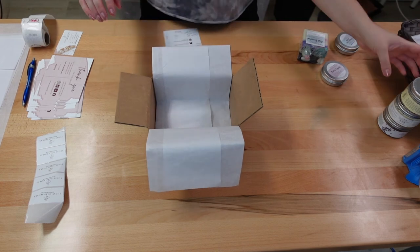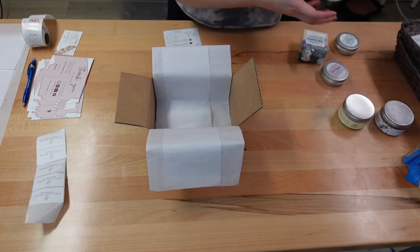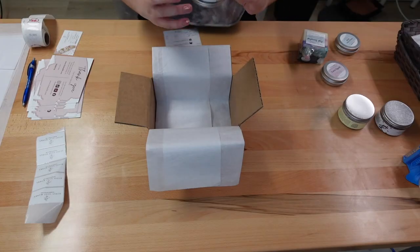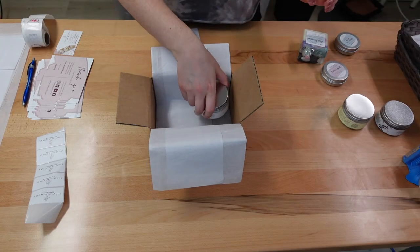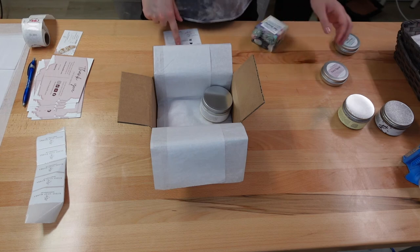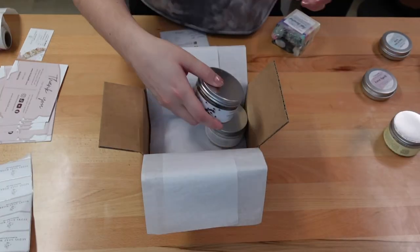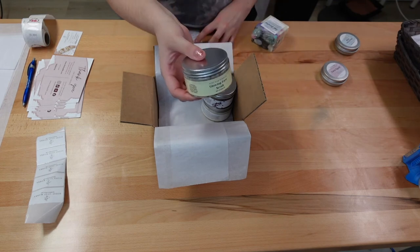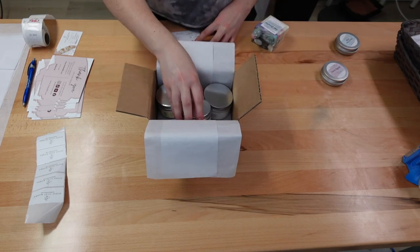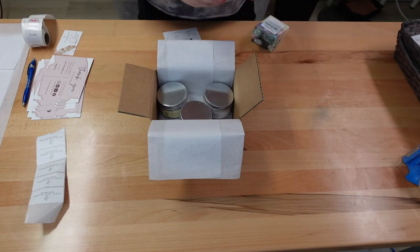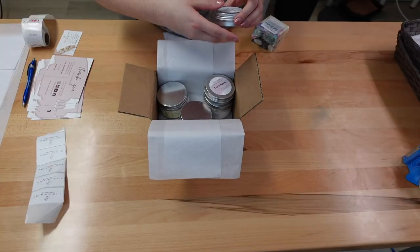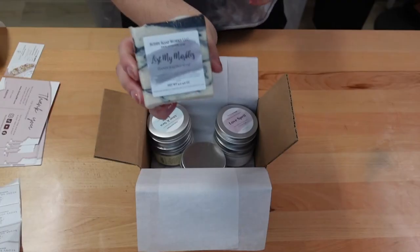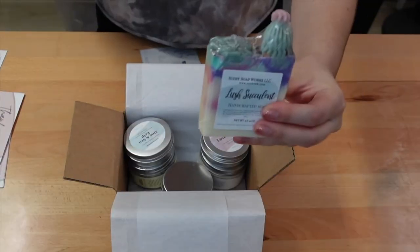So, Angela ordered one pumpkin spice face mask. These are so nice. I love it. I use this almost every single night. And then she ordered a caffeine kick face scrub and a glowing face scrub. And then she ordered a Love Spell solid lotion bar and an aloe and sea kelp solid lotion. And a lots of my marble soap and a succulent soap.